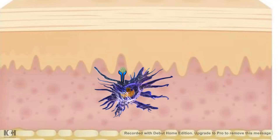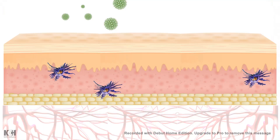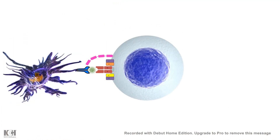Once endocytosed, the antigen is broken down and displayed on the surface of Class II MHC molecules. Some of the dendritic cells or Langerhans cells then migrate along the bloodstream toward the nearby lymph node, where they present the antigen to a T helper cell. The T helper cells that recognize these antigens undergo specific signaling and as a result secrete large amounts of IL-12.